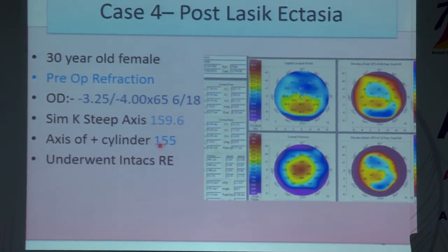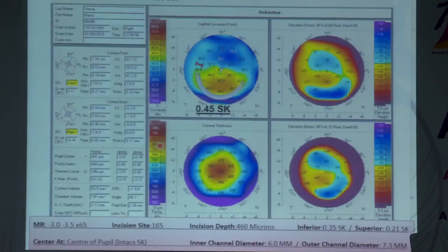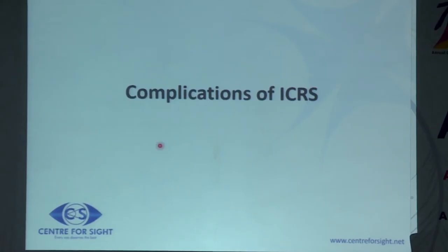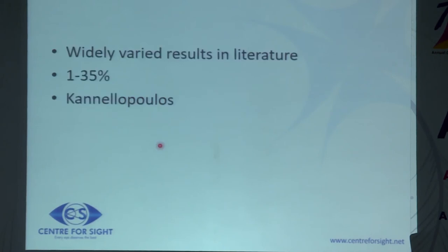For post-LASIK ectasia, a single segment often suffices — for example, a 0.5 SK segment. ICRS complications range from 1 to 35% as reported, but with the femtosecond laser platform and correct case selection, very good results can be achieved.